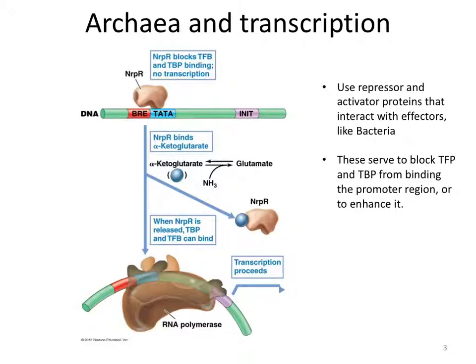Let's talk a little bit about the archaea, only a little bit. What we just finished discussing is how transcription can be controlled at the pre-transcriptional level, and we primarily looked at bacterial examples — actually, we entirely looked at bacterial examples. You should know from the previous lecture on archaea that archaeal promoters are more like eukaryotic promoters, and that archaea do not use sigma factor.